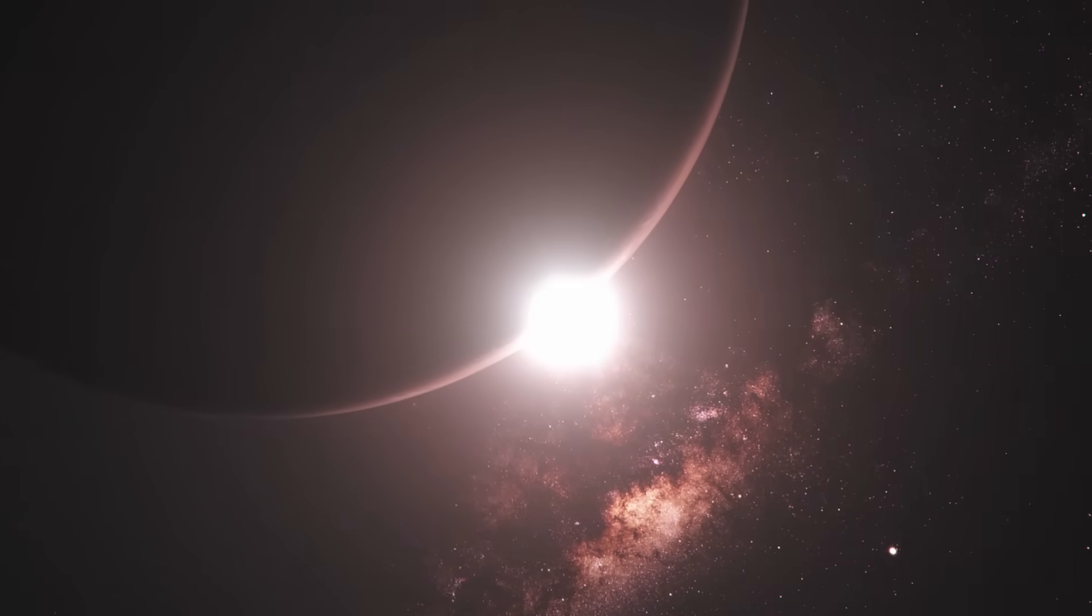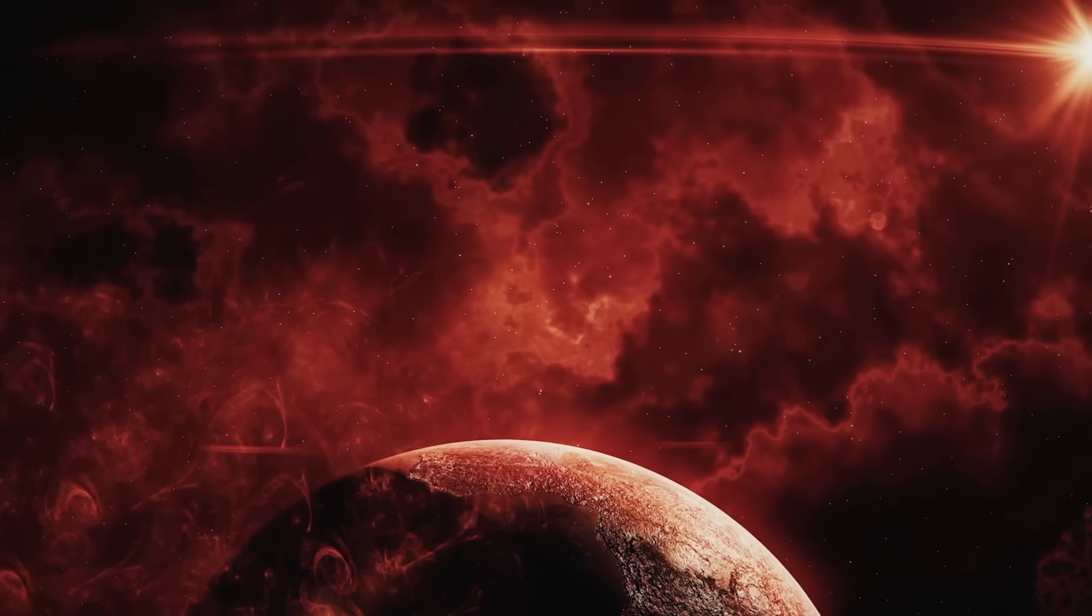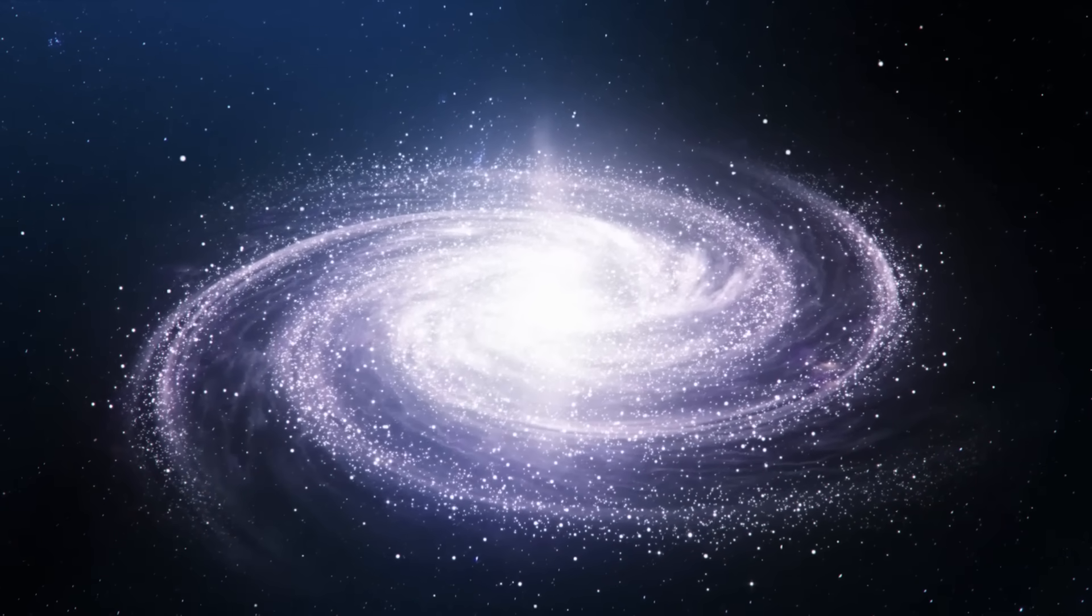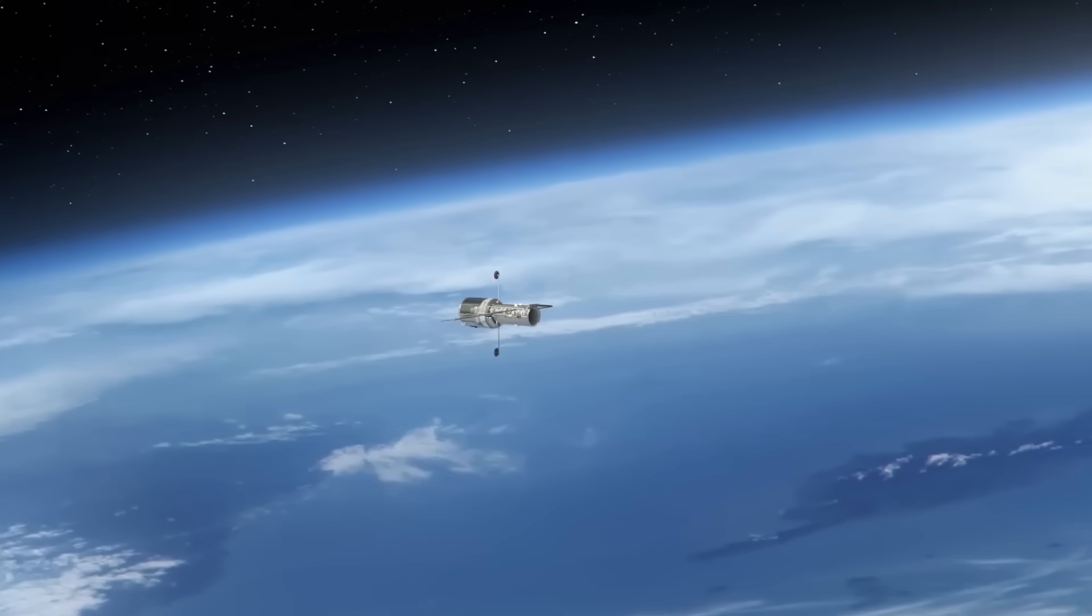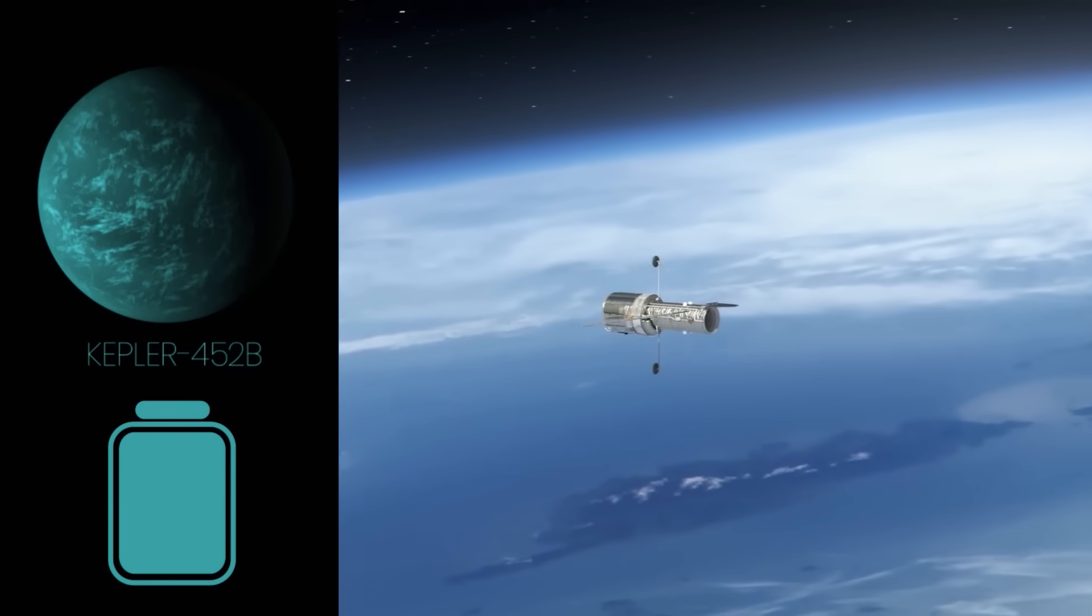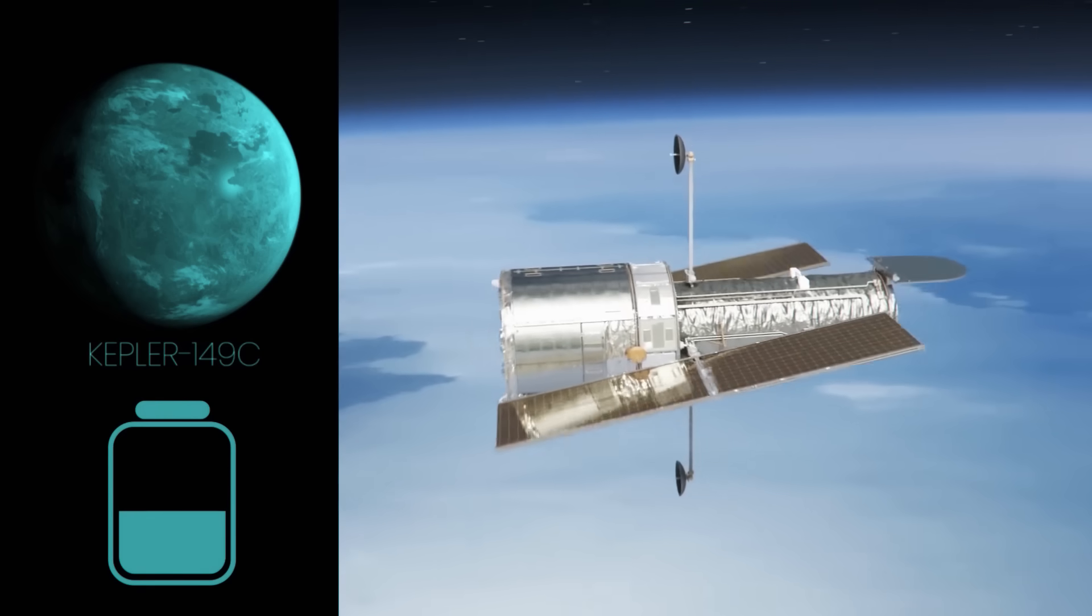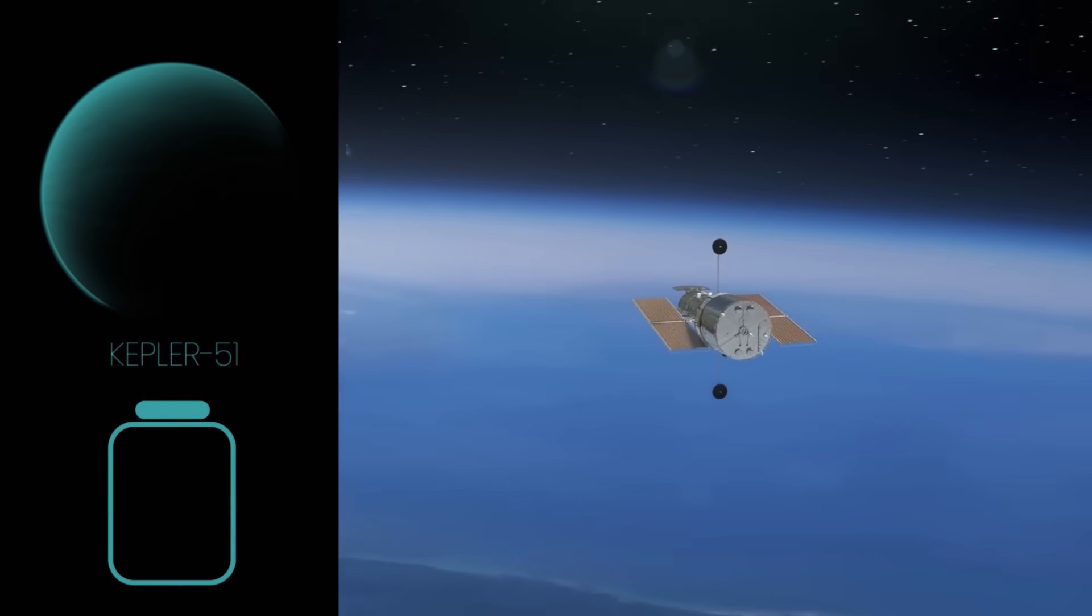The first exoplanets were discovered in the 1990s, and since then we've discovered thousands more using several different methods. But it's not an easy task finding them. There could be at least 300 million potentially habitable exoplanets in our Milky Way galaxy alone. The US Space Agency's Kepler Space Telescope spent nine years on a planet-hunting mission and identified thousands of these exoplanets in our galaxy before it ran out of fuel in 2018.